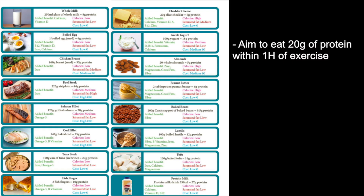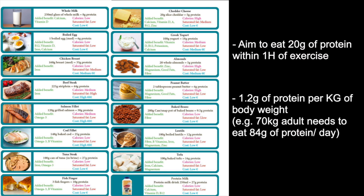Here's an image of the nutritional guidance patients received. It recommended they aim to eat 20 grams of protein within one hour of exercising, and also encouraged them to calculate their daily protein target based around 1.2 grams of protein per one kilogram of body weight. For example, someone who weighs 70 kilograms would need to eat 84 grams of protein. On the left are animal protein sources and on the right are plant-based protein recommendations.